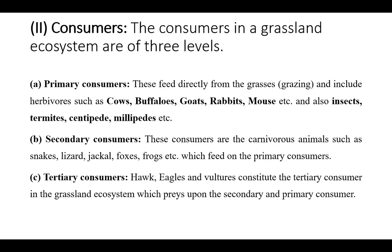The second type of organisms in the food chain are the consumers. The first are the primary consumers, which are herbivores — those who take plants as their food — including cows, buffaloes, goats, rabbits, and mice, as well as insects like termites, centipedes, and millipedes. The secondary consumers are carnivores that eat primary consumers.